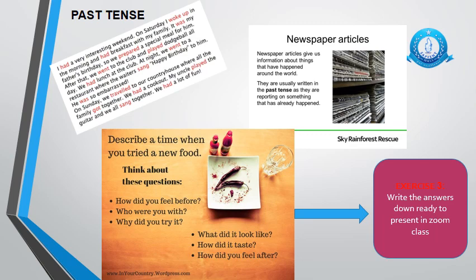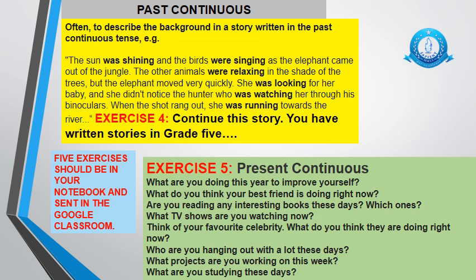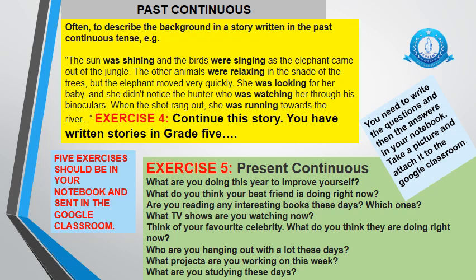For the past continuous and the present continuous I have two exercises here for you. We spent too long going over the rules and filling in blanks, so I thought if you write yourself you'll be better able to understand the tenses being used. For the past continuous, if you look in your storybooks you'll notice that the background is often described in the past continuous tense. Look at this paragraph: the sun was shining and the birds were singing as the elephant came out of the jungle. The elephant came out of the jungle, but when the sun stopped shining and when the birds stopped singing we don't know. I'd like you to continue this story in your notebook.